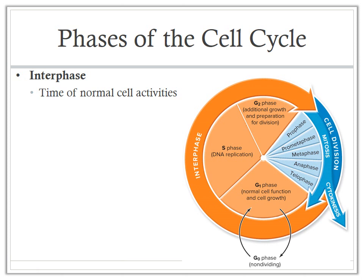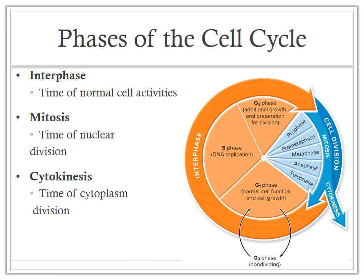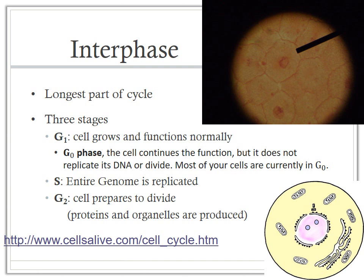Interphase is the time of normal cell activities and is the largest portion of the cell cycle. Mitosis is the time of nuclear division, when the nucleus breaks down and DNA is separated to create two new nuclei. Cytokinesis is the time of cytoplasm division — when the cytoplasm actually splits into two distinct cells.